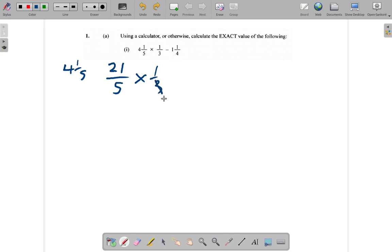So, 3 to 3, 1. There is one 3 in 3. Good. How many threes are there in 21? 7. So, this becomes 7 fifth multiplied by 1 over 1, which is just 7 fifth. So, this part is your 7 fifth.